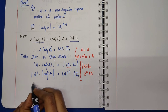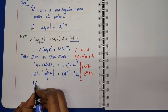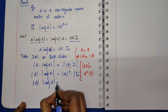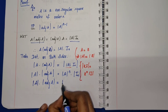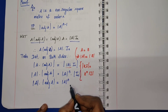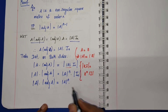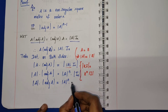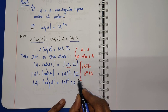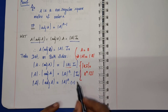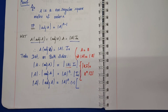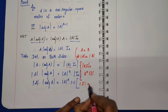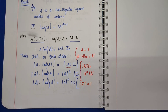The left-hand side remains as it is: determinant A into adjoint A equals determinant A whole power n. Now, the determinant of the identity matrix I_n has value equal to 1. This is the reason for the next simplification.